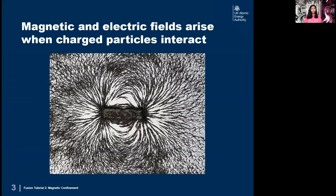First, let's answer the first question: What are magnetic and electric fields? Magnetic and electric fields arise when charged particles interact. In fact, magnetic fields, electric fields, and charged particles are all related. Let's learn about this in a bit more detail by first learning more about magnetic fields.